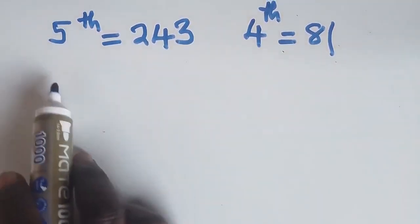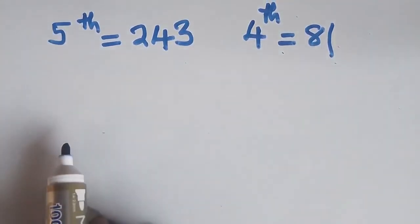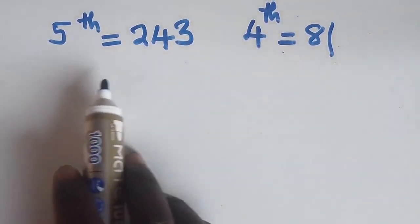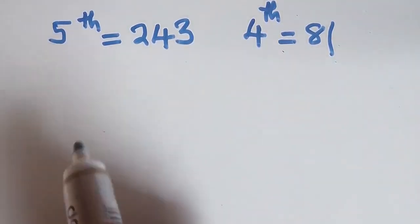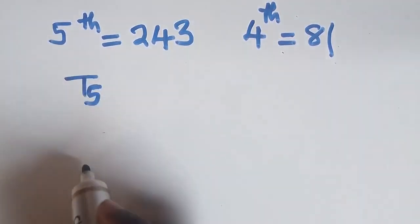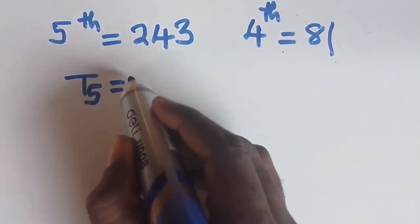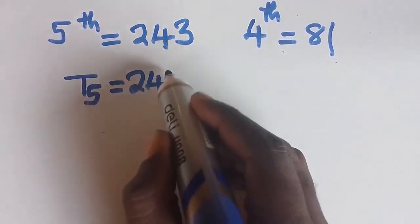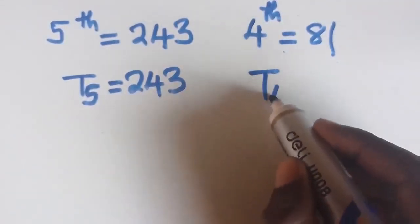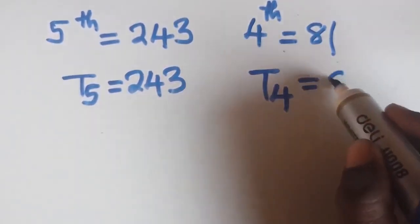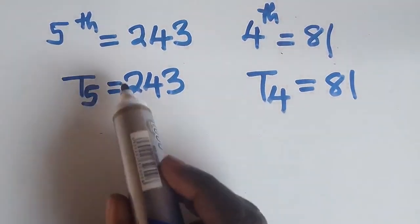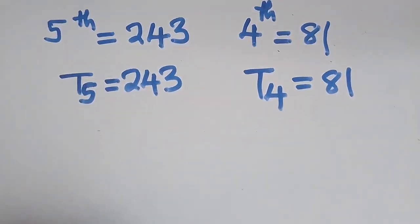So the information given means that T5 is equal to 243, and T4 is equal to 81. This is what the information above is telling us.